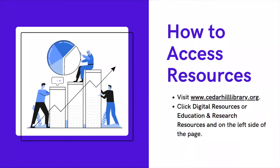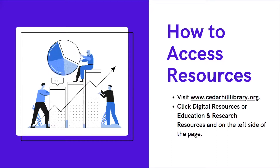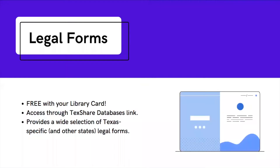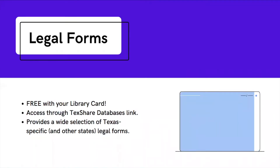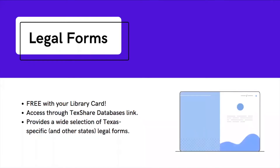To access these resources, you're going to visit our library website, which is www.cedarhilllibrary.org. We'll click Digital Resources or Education Resources on the left side of the page, and then you'll be able to see each of those different resources from there. The first one we're going to be talking about today is called Legal Forms, and it's free with your library card through our TechShare databases.